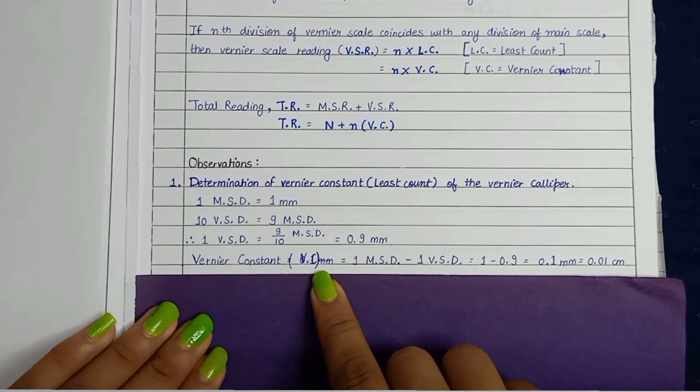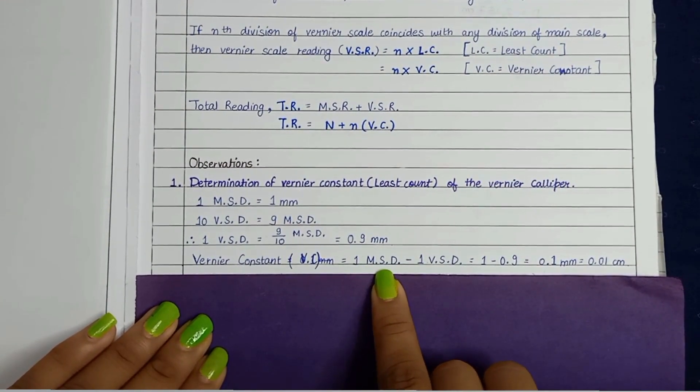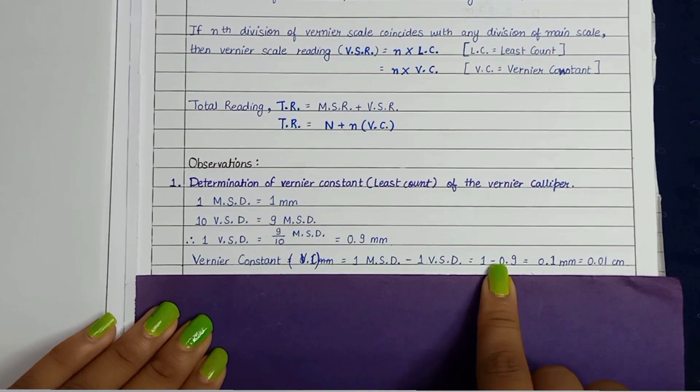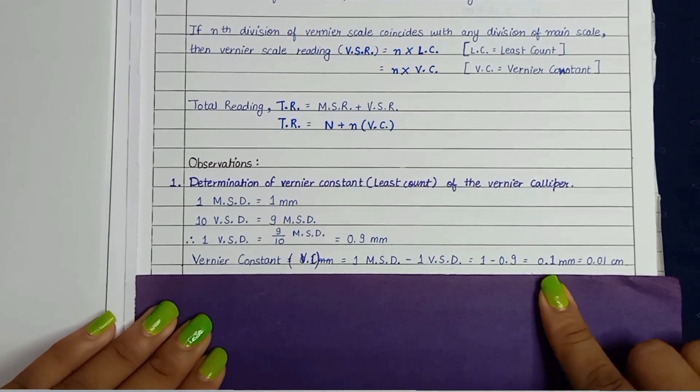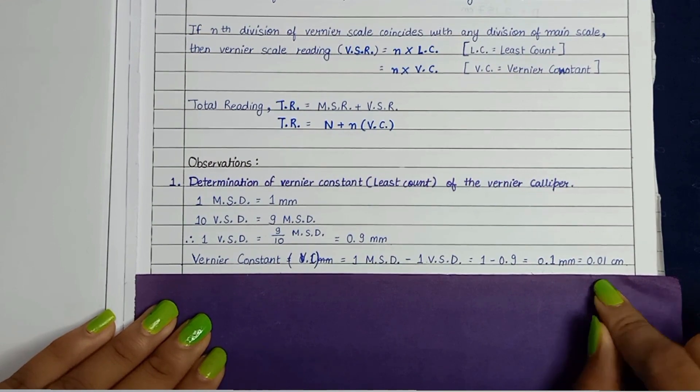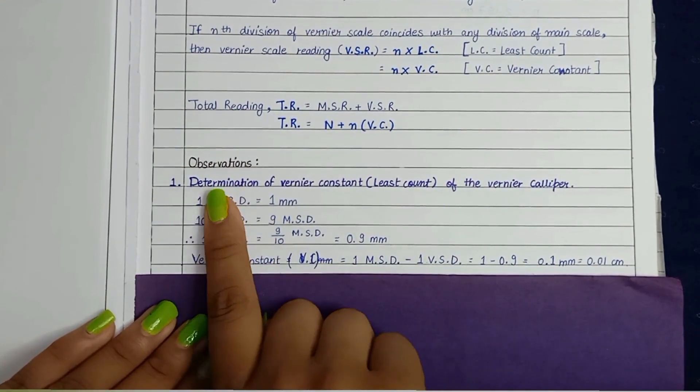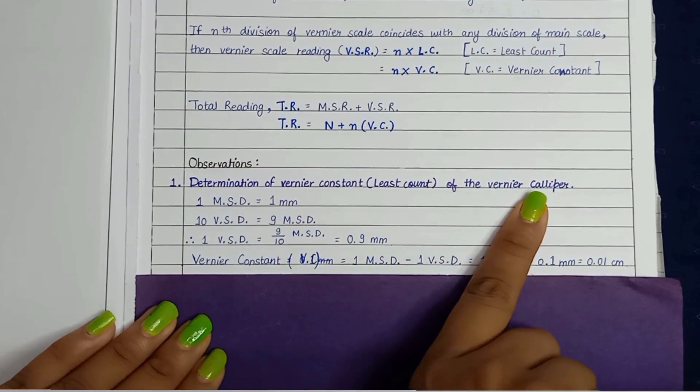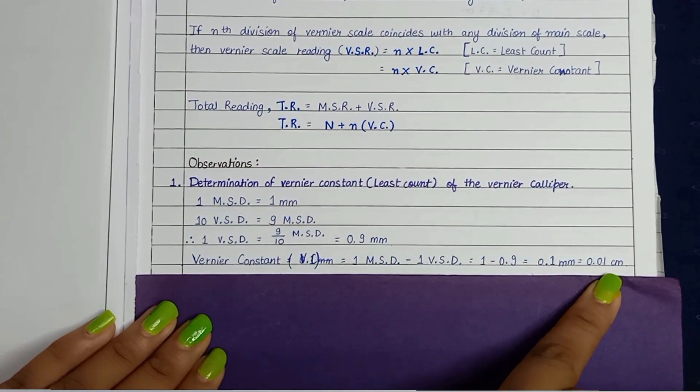Hence, vernier constant is equal to 1 MSD minus 1 VSD equals to 1 minus 0.9 and that we get the result 0.1 mm or you can convert it into centimeter that is 0.01 cm. So the vernier constant of vernier calipers is 0.01 cm.